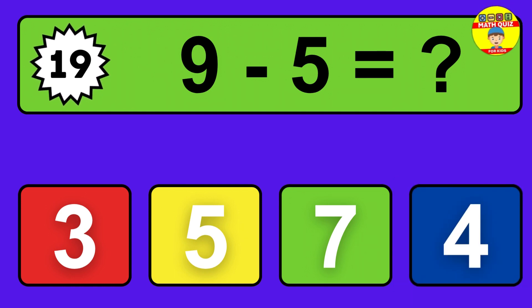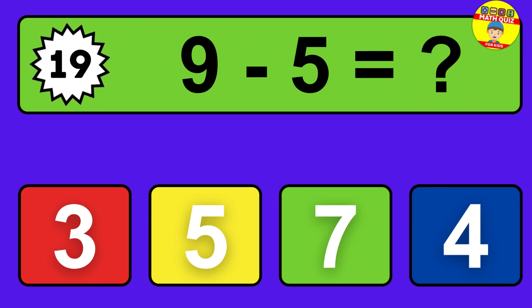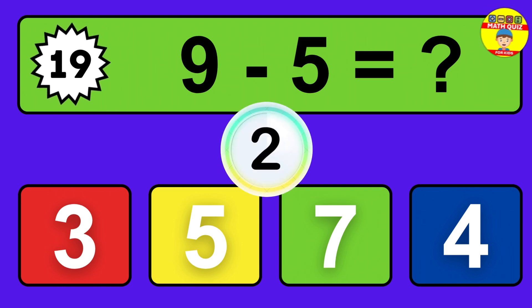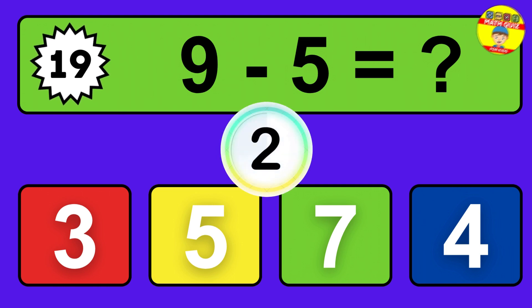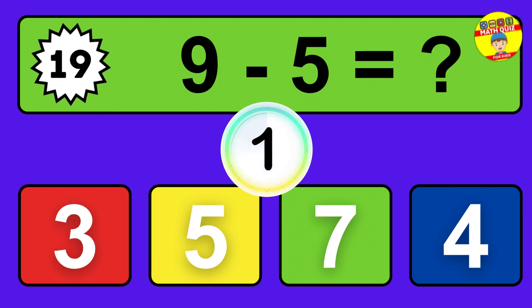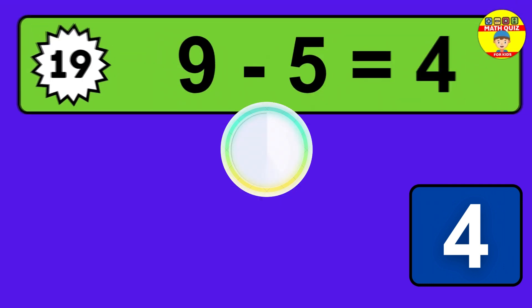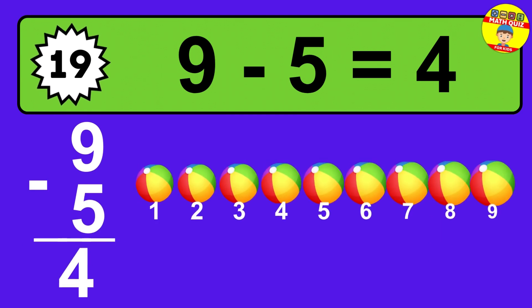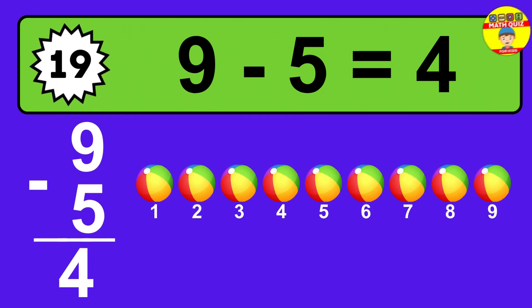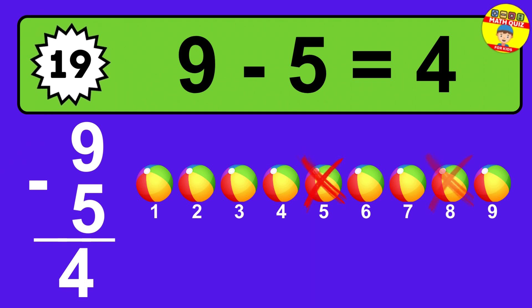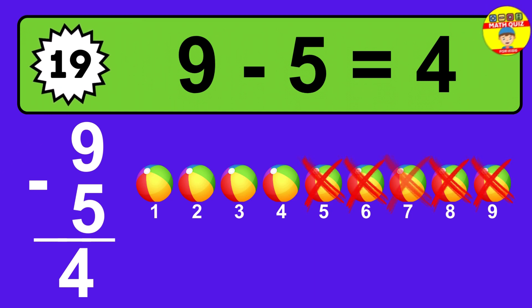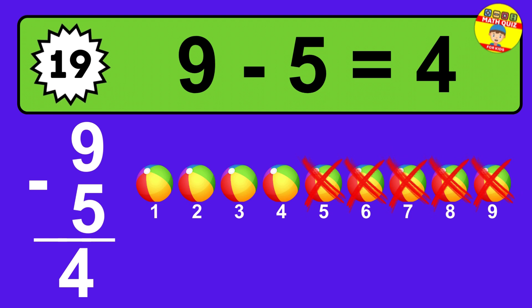Question nineteen: nine minus five equals what? The answer is nine minus five is four. Let's count it. One, two, three, four.